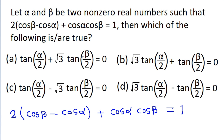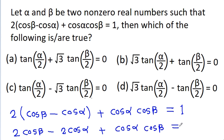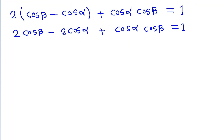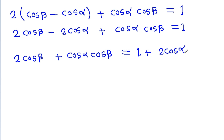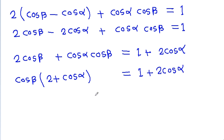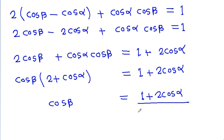And in every option, we have alpha and beta separated. So, if we try to separate alpha and beta, then we get 2cos(beta) minus 2cos(alpha) plus cos(alpha)cos(beta) is equal to 1. And it is 2cos(beta) plus cos(alpha)cos(beta) is equal to 1 plus 2cos(alpha). And if we take cos(beta) common, then we get cos(beta) times (2 plus cos(alpha)) is equal to 1 plus 2cos(alpha). And we get cos(beta) is equal to (1 + 2cos(alpha)) / (2 + cos(alpha)). So, we have separated alpha and beta.